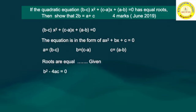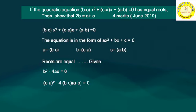Now substitute the values of a, b, and c into the discriminant. b is (c minus a), so b² equals (c minus a)², minus 4ac, where a is (b minus c) and c is (a minus b). These values are substituted into the discriminant expression.